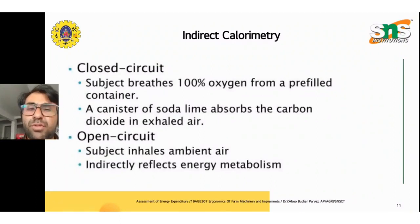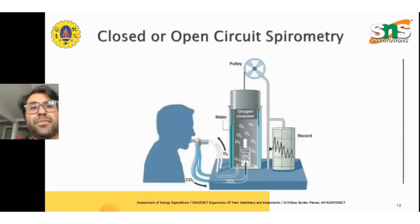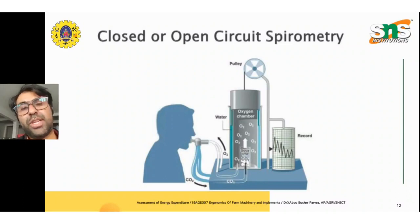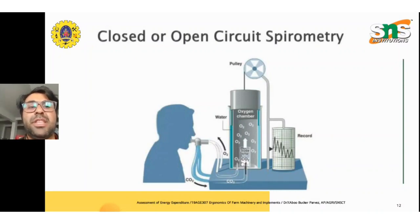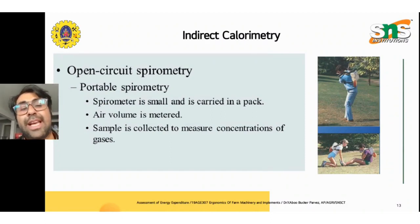A canister of soda lime absorbs the exhaled carbon dioxide. In open circuit spirometry, the subject inhales ambient air, which indirectly reflects energy metabolism. A pictorial representation of closed and open circuit spirometry shows a recording graph sheet, a pulley attached to the oxygen chamber, soda lime acting as a CO2 absorber, and the person breathing through a mouthpiece nozzle. In open circuit spirometry, bags are attached; a small spirometer is carried in a pack, air volume is metered, and a sample is collected to measure gas concentration.